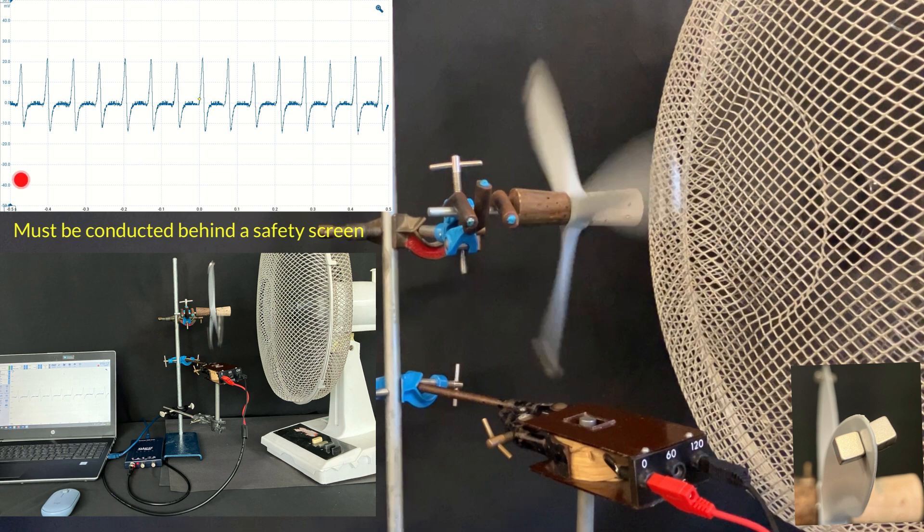Remember, the oscilloscope trace is showing potential difference in the up-down direction and time across here. So if we look at the oscilloscope trace...